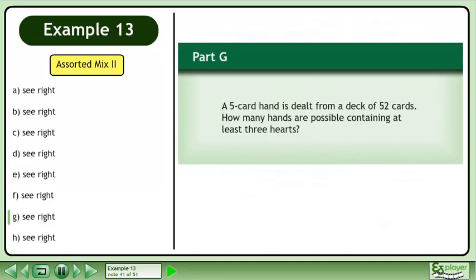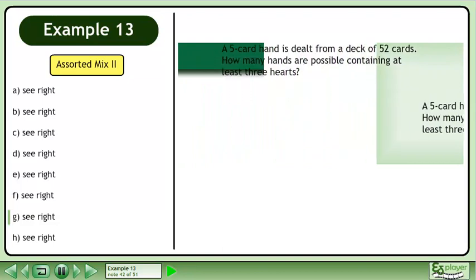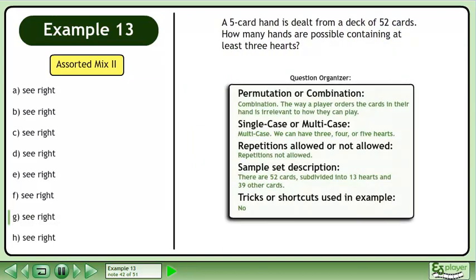Now we'll move on to part G. A five-card hand is dealt from a deck of 52 cards. How many hands are possible containing at least three hearts?